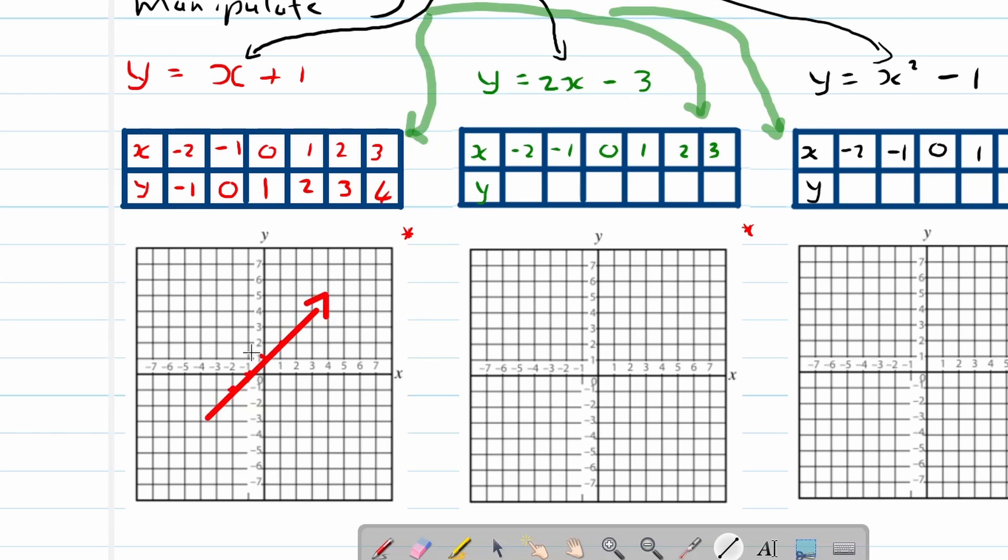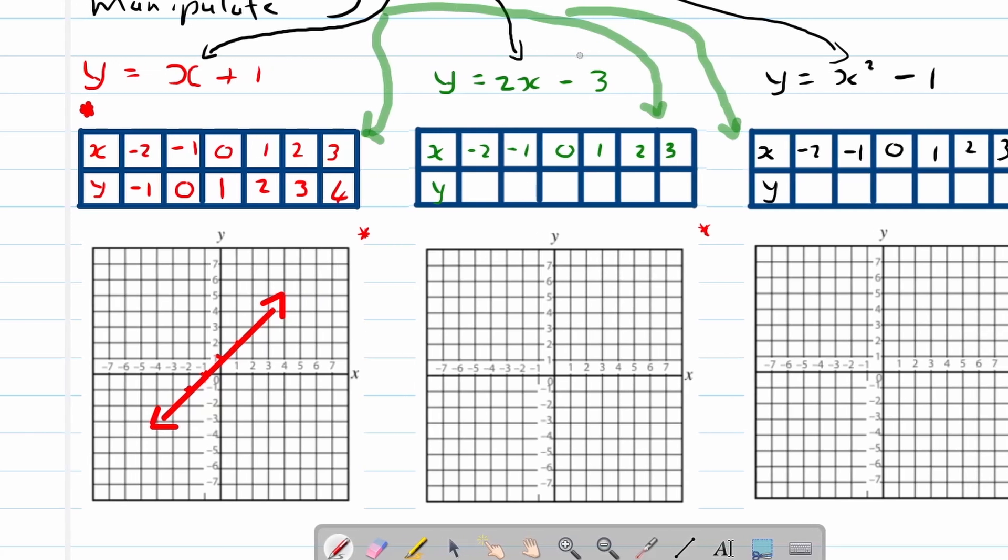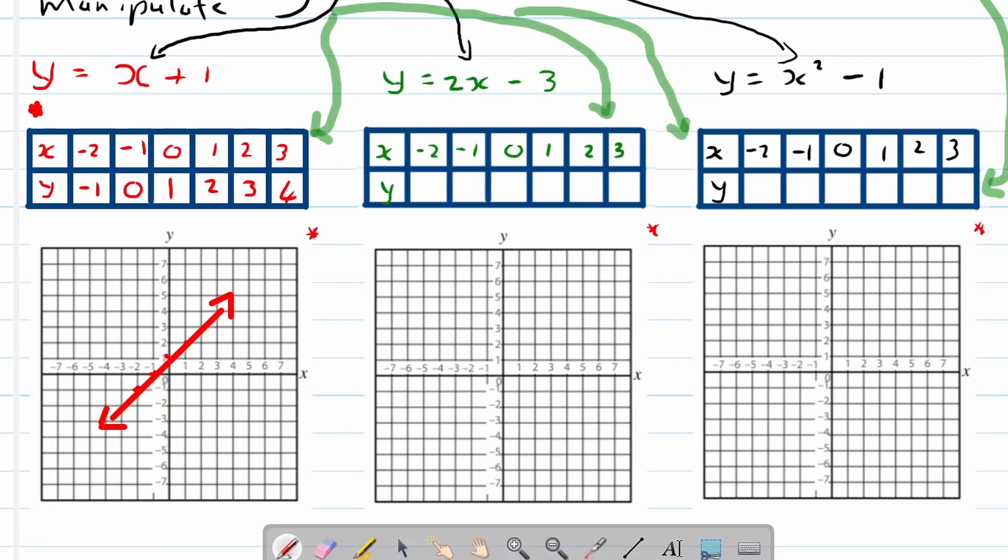This is a straight line graph, a visual representation of our function right over there. Let's look at number 2, the second example. y equals 2x minus 3. It's still a straight line graph but I thought I'd just spice it up a little bit with multiplying by 2. So negative 2 times 2 is negative 4, negative 4 minus 3 is negative 7.